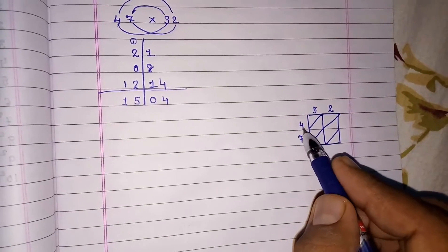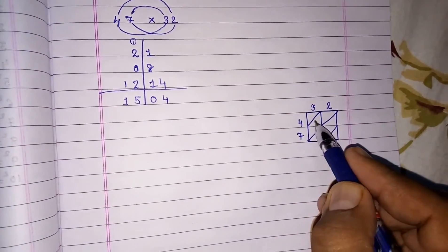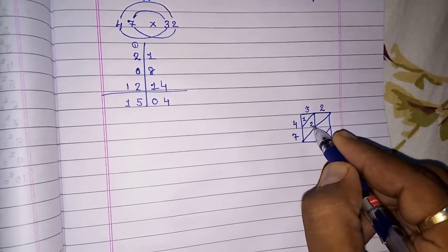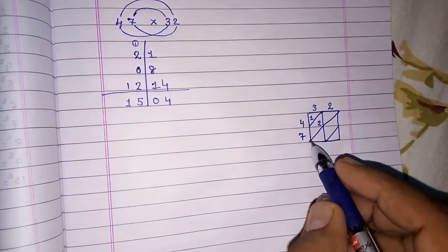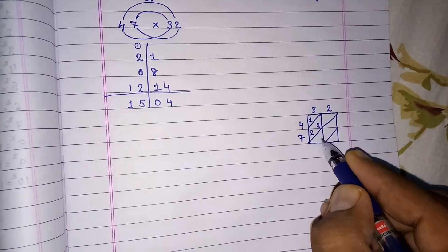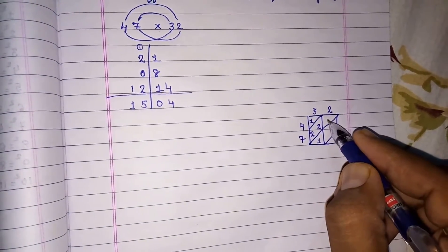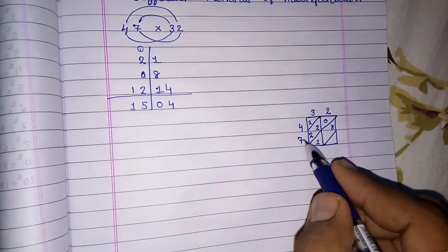You have to just multiply: 4 into 3 gives you 12, so 1 here, 2 here. Then 7 into 3, 21: 2 here, 1 here. 4 into 2, 8: 0, 8.